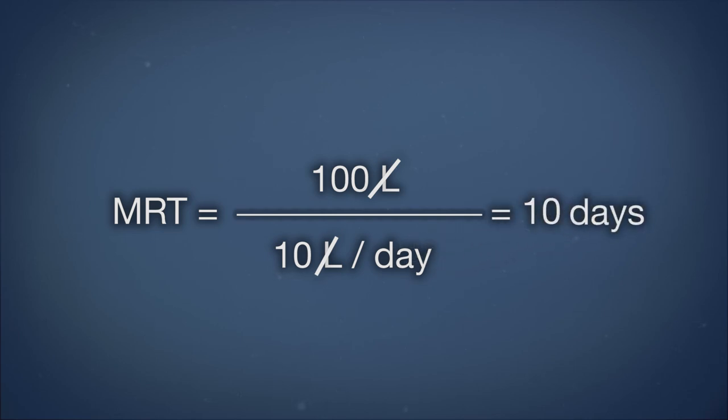That means that an average water molecule stays in the bucket for approximately 10 days. If you are studying two lakes, and the water in one lake has a mean residence time of 10 days, and the water in the other lake has a mean residence time of 100 days, the lake with a mean residence time of 10 days will flush more rapidly. This becomes significant when a pollutant spill occurs. A lake with a smaller mean residence time means it will flush more rapidly and potentially clean itself more quickly after a pollution event.